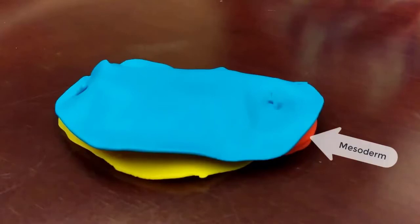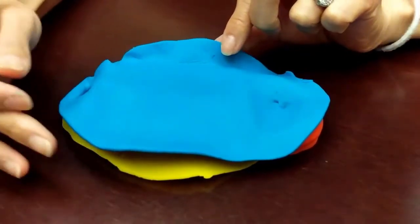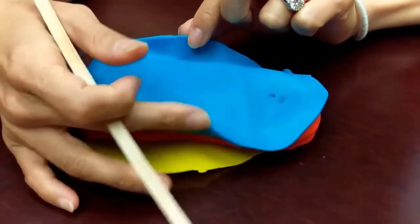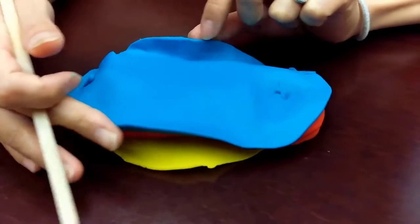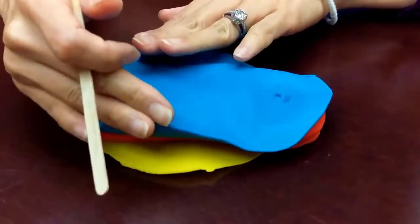And in between the two layers, we have the mesoderm. Although we are only looking at the embryo proper, the trilaminar germ disc right now, we have to remember that the ectodermal layer curves up in the periphery to become continuous with the amniotic membrane. And likewise, the endodermal layer curves down ventrally to become continuous with the yolk sac membrane.